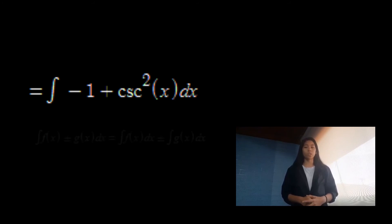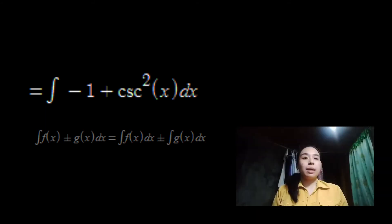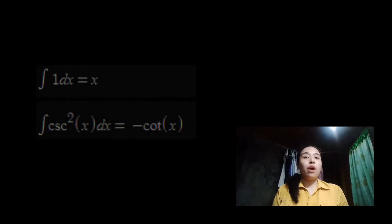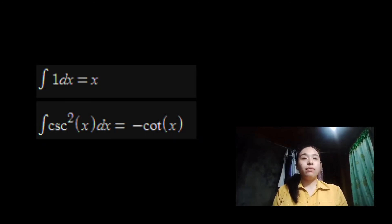Since we already have the equation, the next thing we're gonna do is to get the integrals of the equation. The equation is now integral of negative 1 plus cosecant squared times x dx. Now, we need to apply the sum rule since we are now adding due to the Pythagorean identity. We need to separate the addends and get the individual integrals. We now have the integral of 1 dx and integral of cosecant squared times x dx. The result will be x and negative cot x respectively.